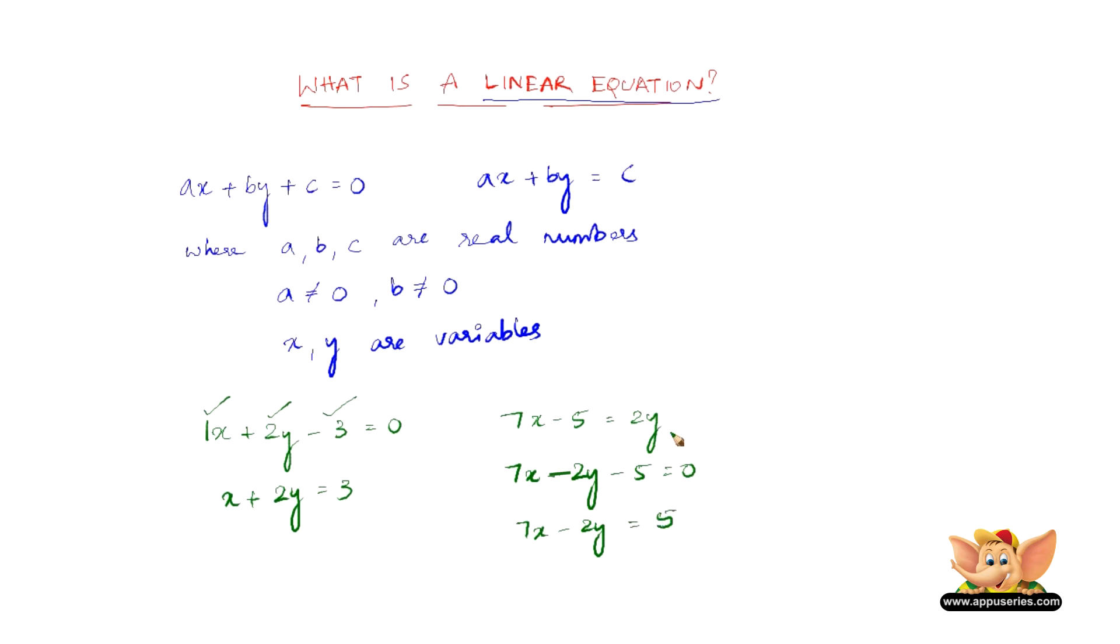So, of course, 7x minus 5 equal to 2y is very much a linear equation, but then it has to be written either in this form or in this form. The only objective behind that is getting all the variables to one side of the equal to sign and the constant can be to the other side or on the same side.